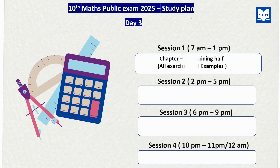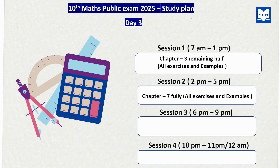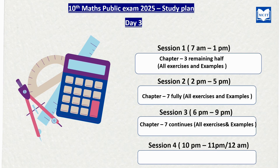Day 3, Session 1: Chapter 3 — you will complete the first half and then move to the next chapter. Day 3 morning Session 1, you will complete Session 1. In Session 2, you will explore Chapter 7 — all the exercise sums and example sums, complete and full. In Session 3, you will be able to complete Chapter 7.